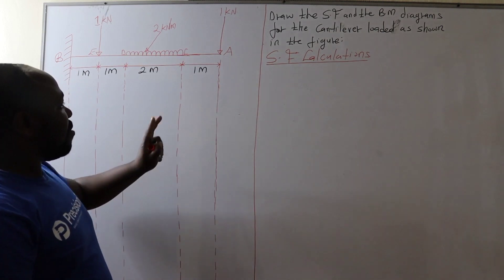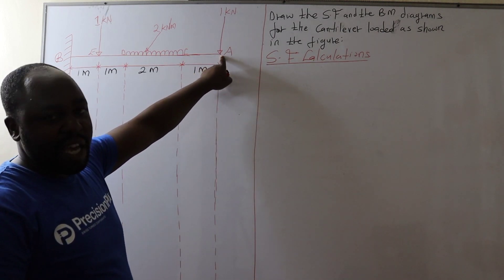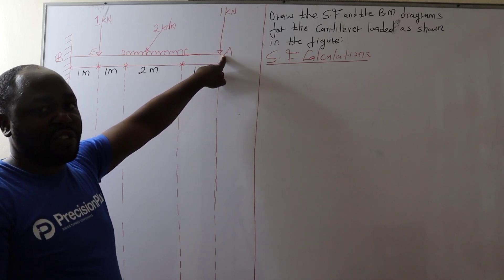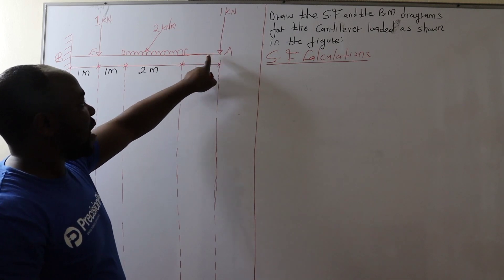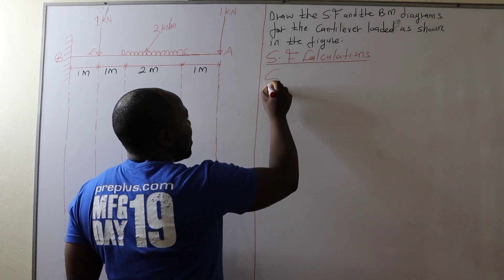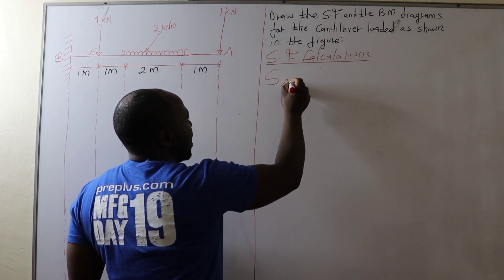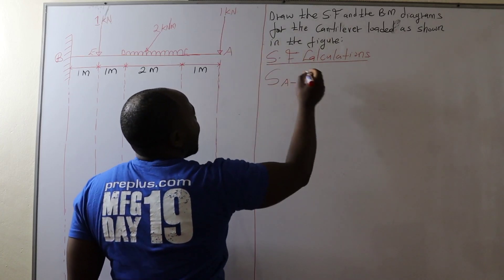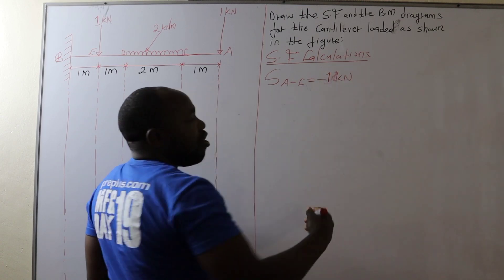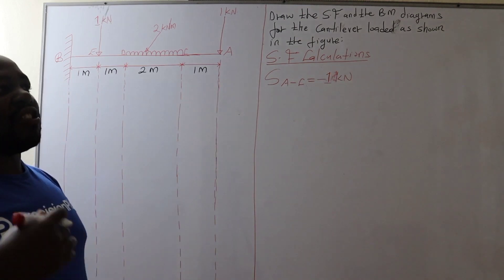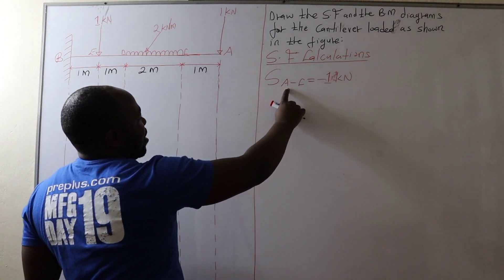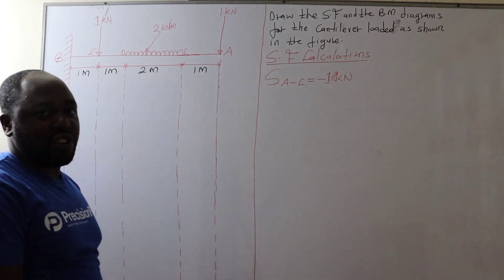When you look at our cantilever, at point A we have a concentrated load of 1 kN. Then between point A and C our cantilever is free, not carrying any load. Therefore the shear force between point A and point C is going to be negative 1 kN. Remember shear force is the sum of all the forces acting on either side of a given point.